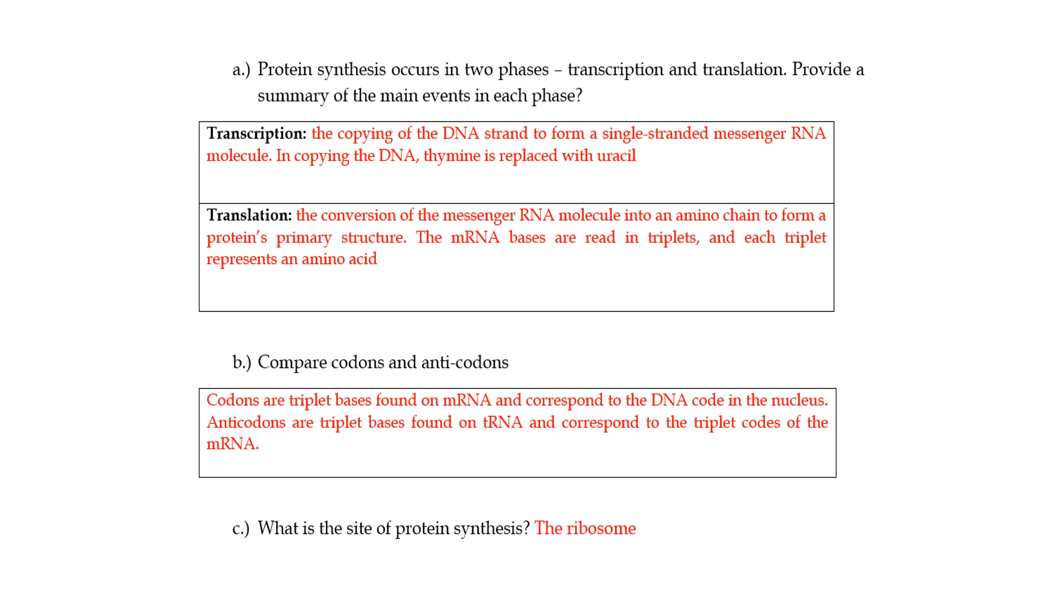Translation is the conversion of that messenger RNA molecule into an amino acid chain to form a protein's primary structure. What I didn't mention here is that translation involves the tRNA, which is the transfer RNA. What that tRNA does is it will read the triplet codons on the mRNA - the triplet bases, which is what we call a codon.